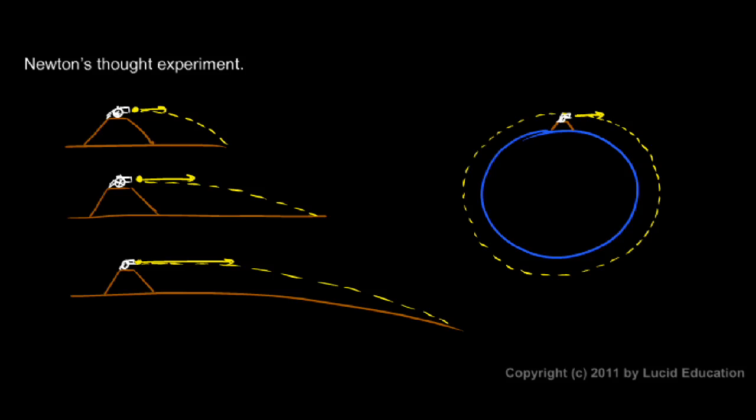Now in reality, this would never happen with a cannonball because the air resistance would slow the object down and it would very quickly fall to the Earth's surface. But if you could go somewhere where there weren't any air resistance, it would continue to move around in a circular path around the Earth like this indefinitely. And you can do that if you can get above the atmosphere.